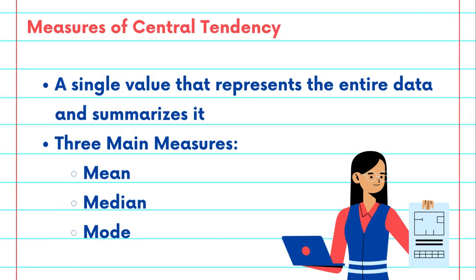In this video, we'll be talking about measures of central tendencies. A measure of central tendency is a single value that represents the entire data and summarizes it to give us some initial insights. There are three main measures of central tendency: the mean, the median, and the mode.